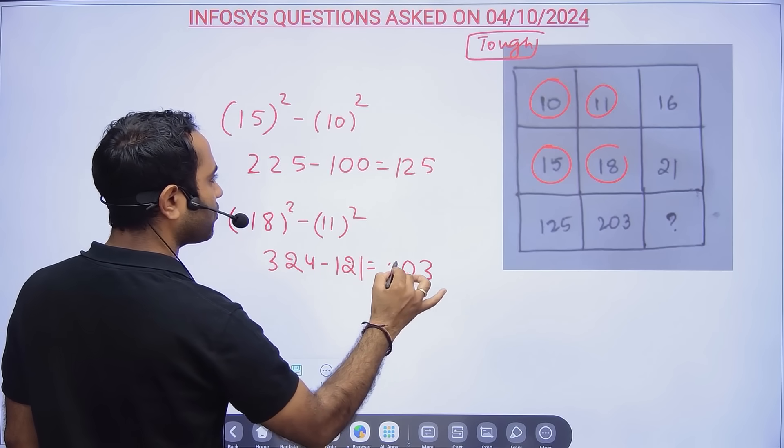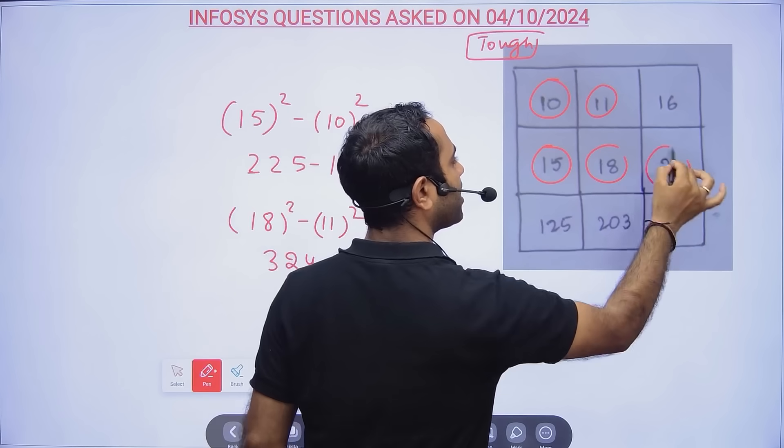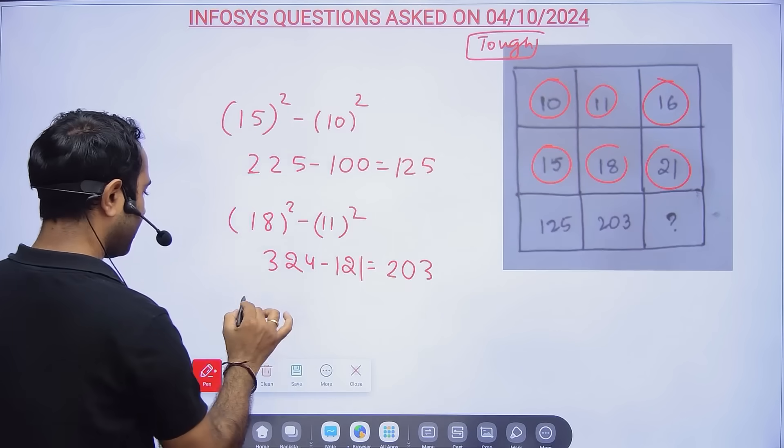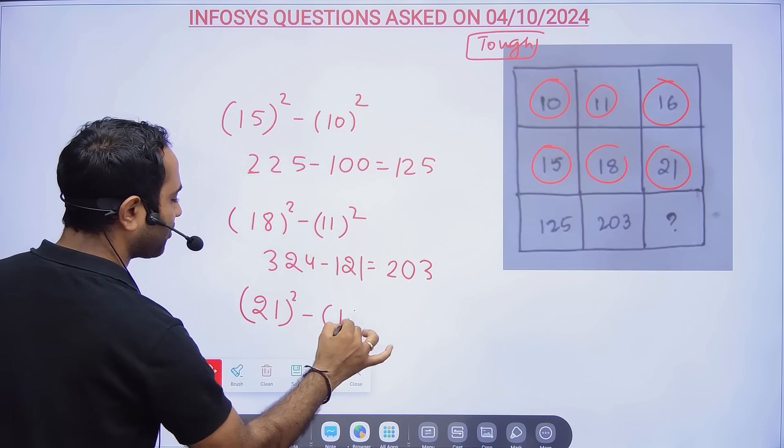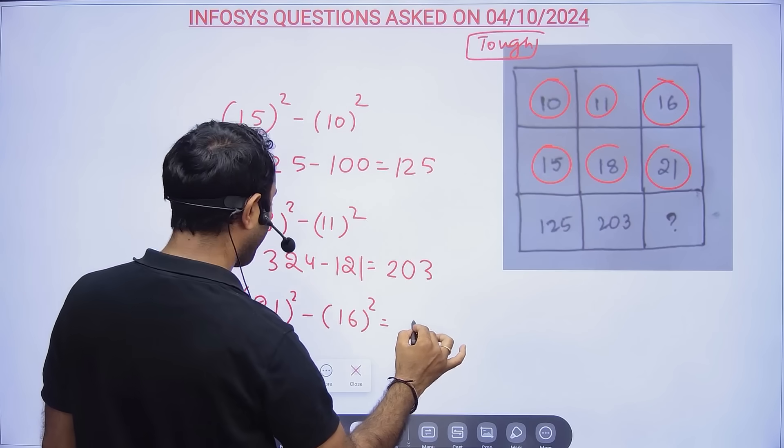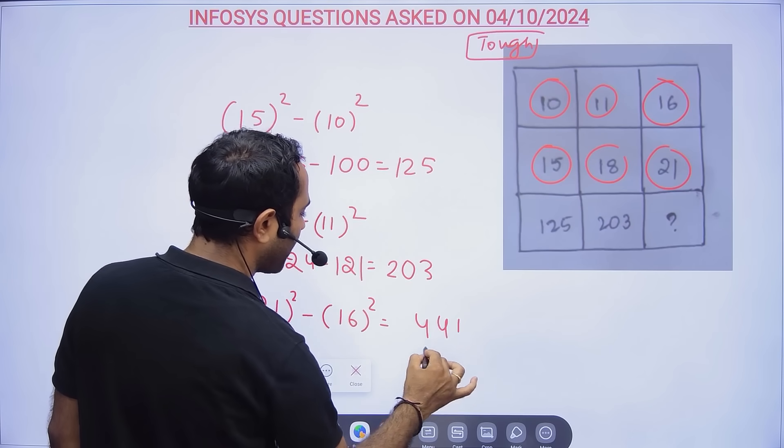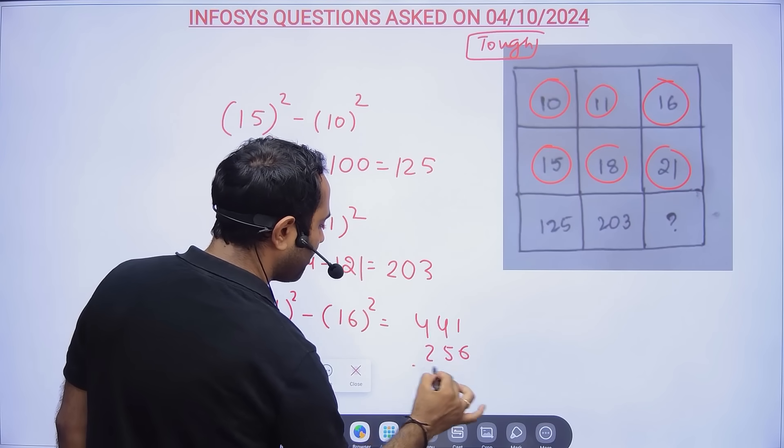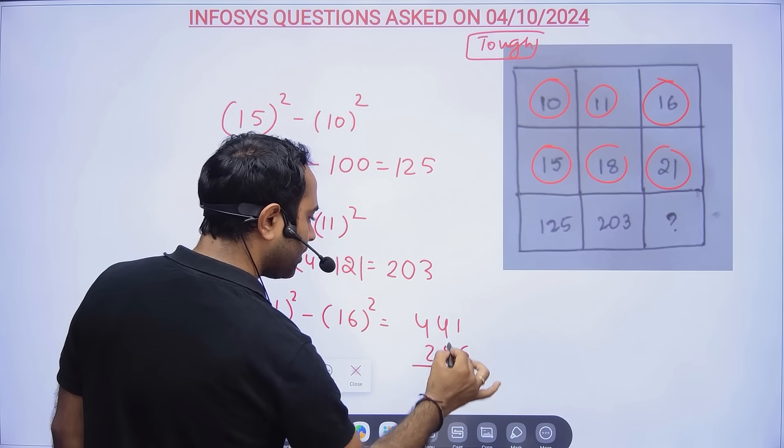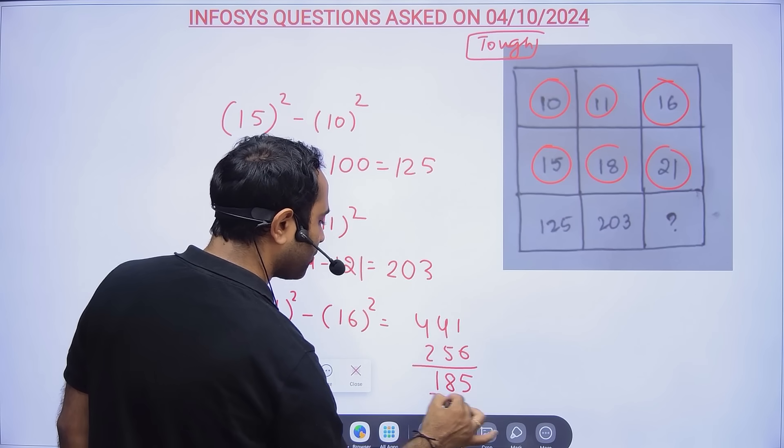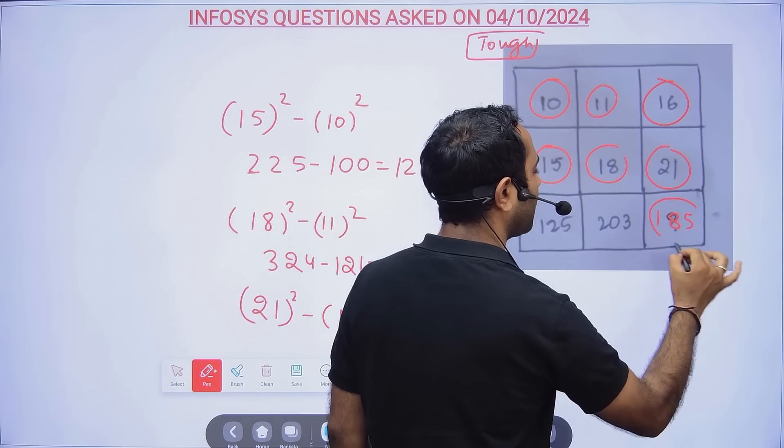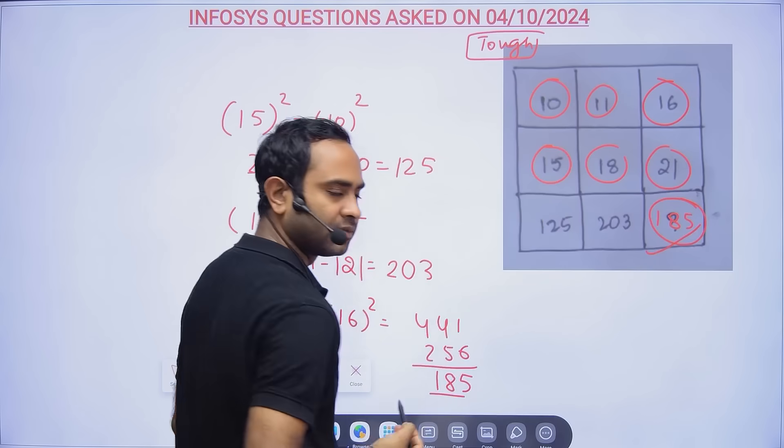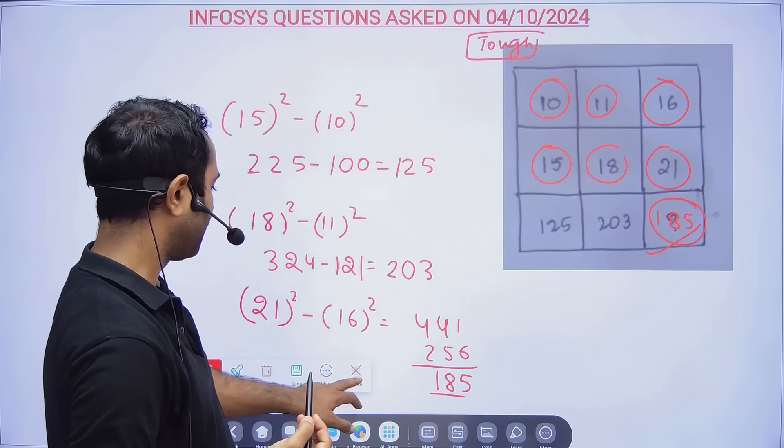Then here 21² minus 16²: 21² = 441 and 16² = 256, so 441 - 256 = 185. 185 was the answer for this particular puzzle.